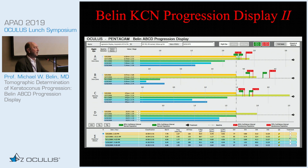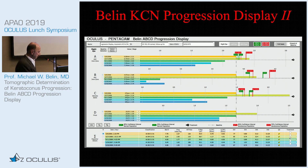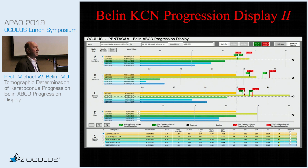The new version two is currently available at the booth and should be released within the next month or so, representing a number of significant improvements. It again shows graphical changes in the anterior surface, posterior surface, corneal thickness, and distance visual acuity, and shows confidence intervals for both the normal and keratoconic population at 80% and 95% confidence levels.